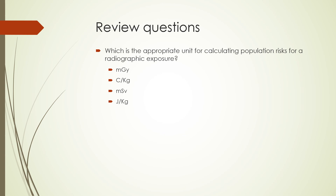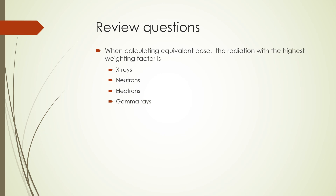Next question: which is the appropriate unit for calculating population risks for a radiographic exposure? The choices are milligray, coulombs per kilogram, millisievert, or joules per kilogram. The correct choice is millisievert. Next question: when calculating equivalent dose, the radiation with the highest weighting factor is? The choices are x-rays, neutrons, electrons, or gamma rays. The correct choice is neutrons.